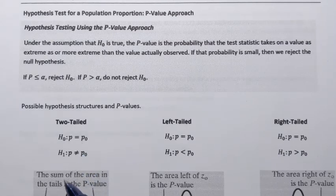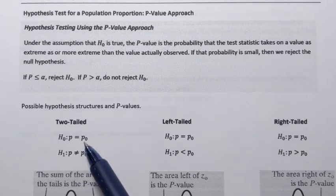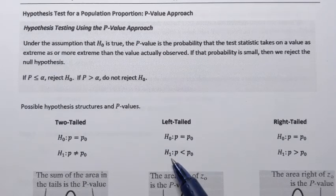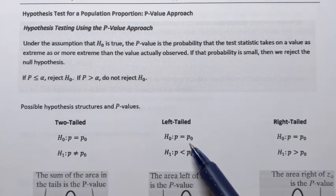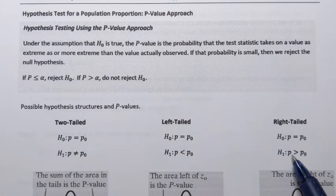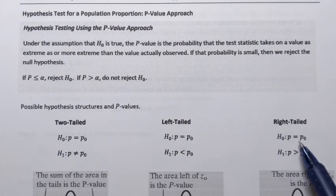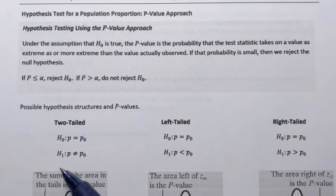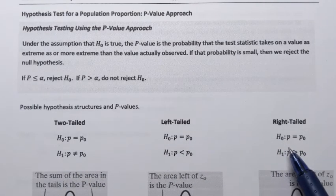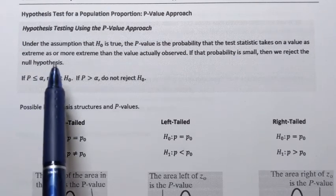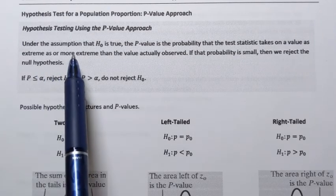The alternative hypothesis can state that the population proportion is simply not equal to that number, or that it is less than the one stated in the null hypothesis, or that it is greater than the one stated in the null hypothesis. That gives us three possible hypothesis structures. We'll come back to them in a minute, but let me first briefly explain the idea of the p-value approach.